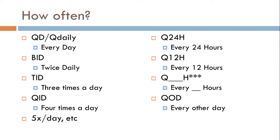One last note on Q12H and Q24H: sometimes prescribers won't write the 'H' and will instead put a small circle — almost like a degree sign — at the top.